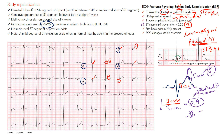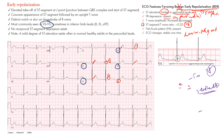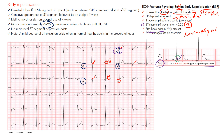Another clue is the fish hook pattern, seen most often in lead V4. This pattern on the downstroke of the R wave looks like a fish hook or reverse fish hook. It's a localized finding and can be an easy visual clue for identifying early repolarization.